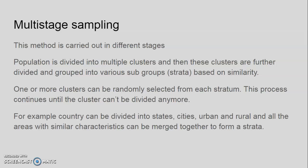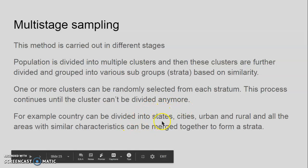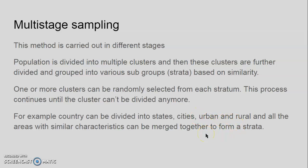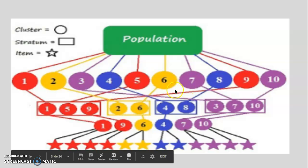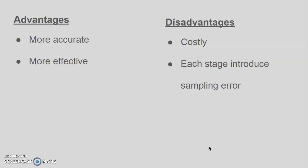Multi-stage sampling is carried out in different stages. You make the group into clusters, then again into strata, and then again into clusters, making them smaller and smaller until you get enough samples. For example, a country can be divided into states, then cities, then urban and rural areas, and samples are taken from every cluster. Advantages: more accurate and more effective. Disadvantages: costly method, and each stage introduces sampling error.